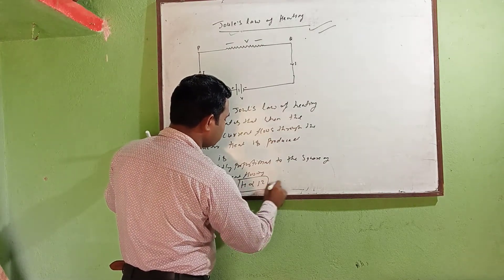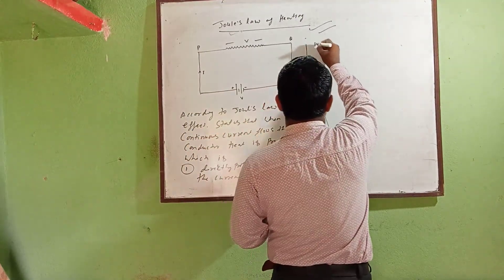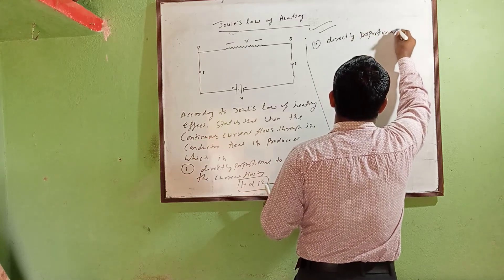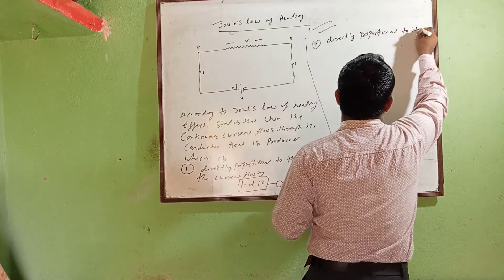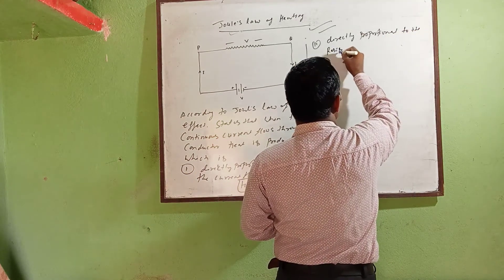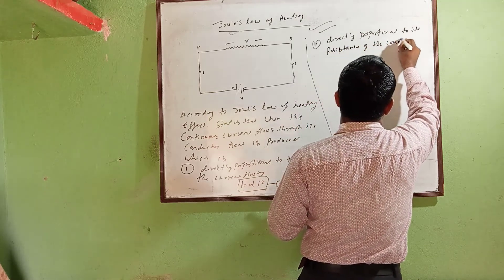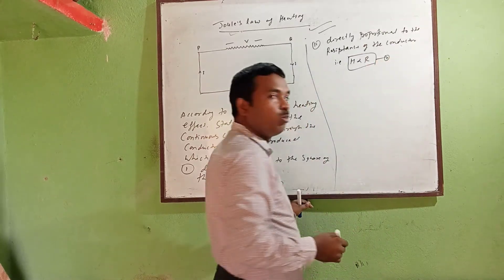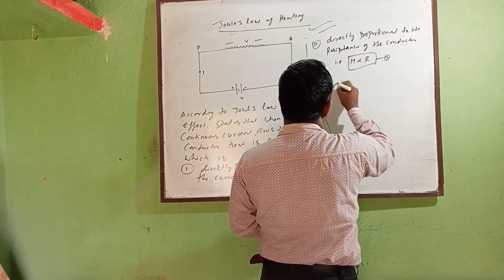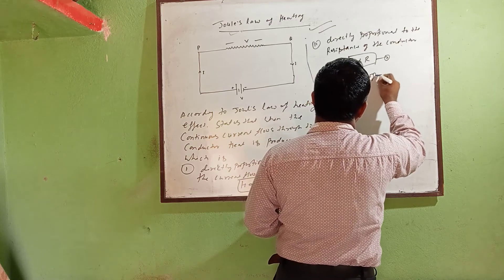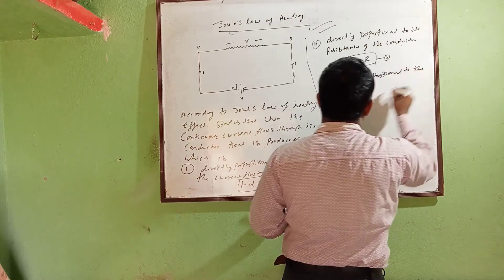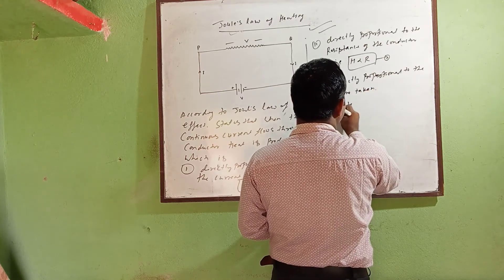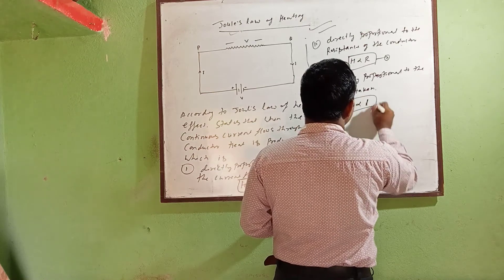Second, the heat produced is directly proportional to the resistance of the conductor. That is: H is directly proportional to R. This is the second equation. Third, the heat is directly proportional to the time taken. That is: H is directly proportional to T. This is the third equation.